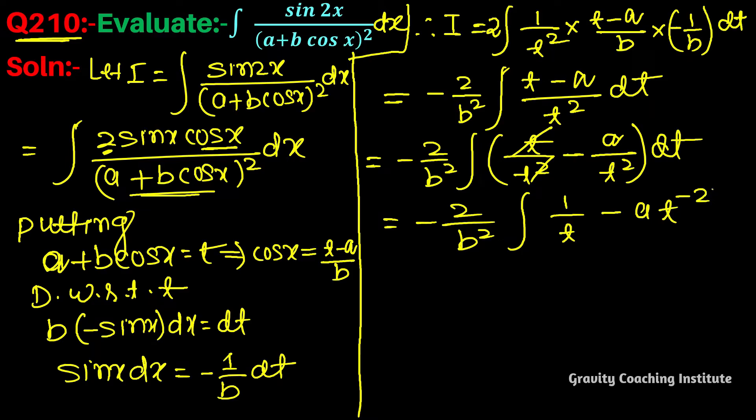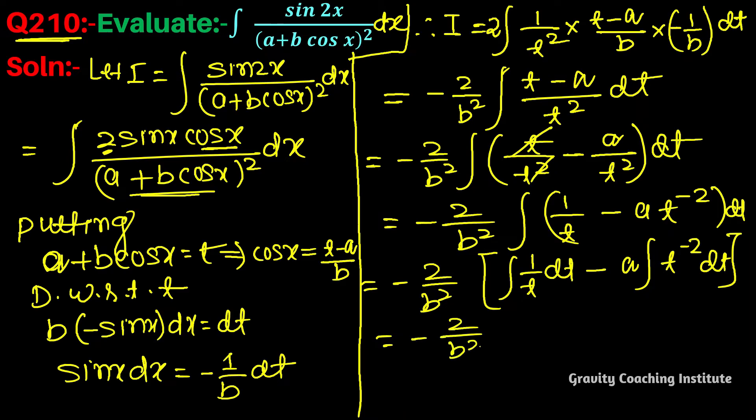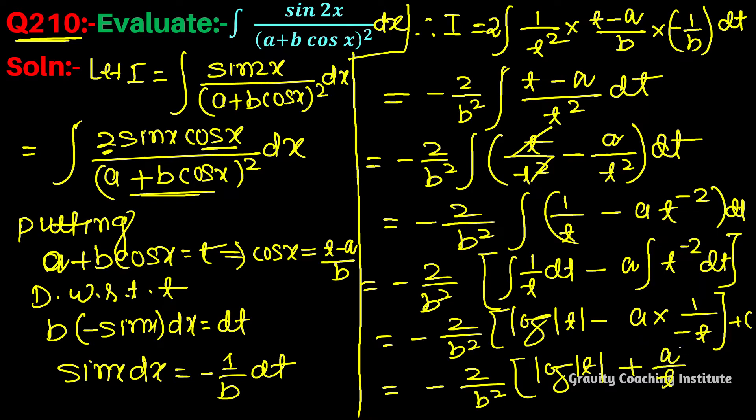Integrating 1 by t to the power minus 2 dt gives log mod t minus 1 by t plus c, equal to minus 2 by b square log mod t plus a by t. And now we will put t values.